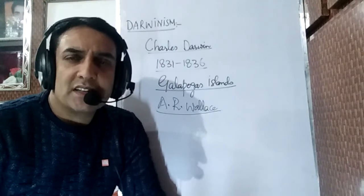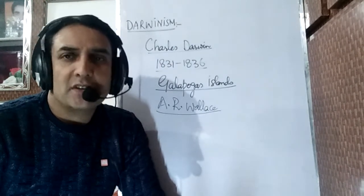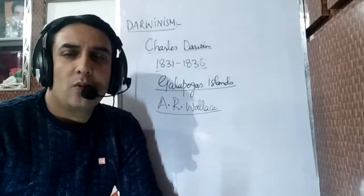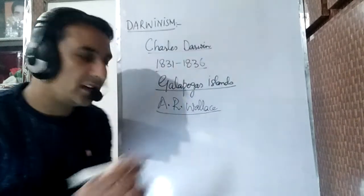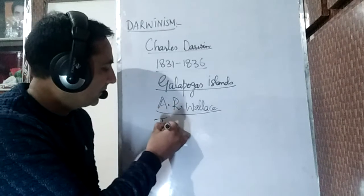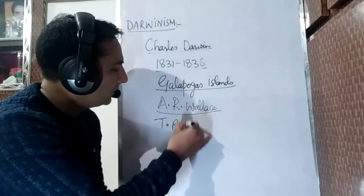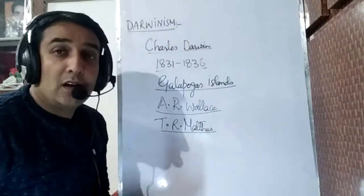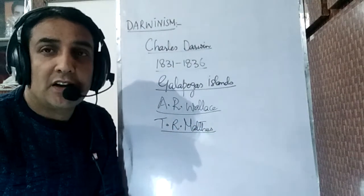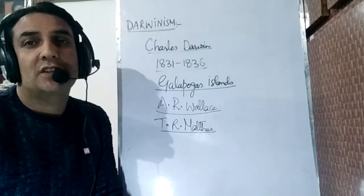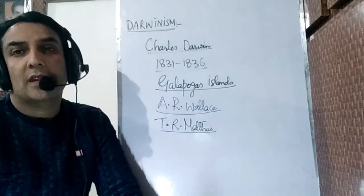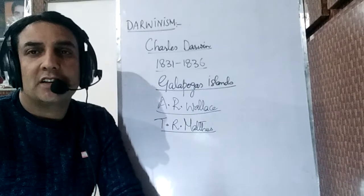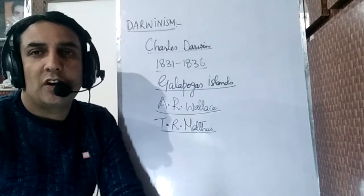During this same period, a famous demographer — Thomas Robert Malthus, simply called T.R. Malthus — put forth his theory, commonly known as the Malthusian theory. He wrote a research paper entitled 'On the Principles of Population.'